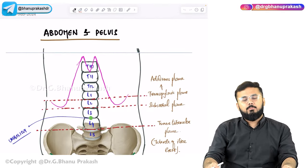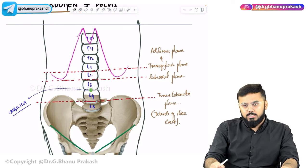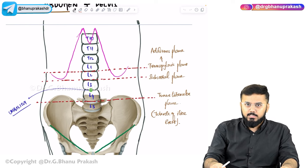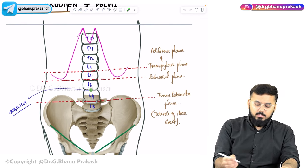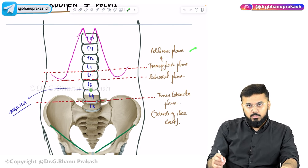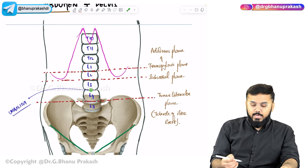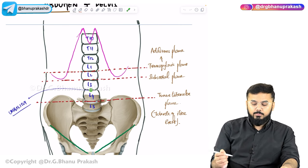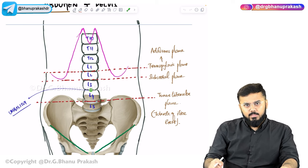Hello guys. We shall be discussing some important topics in Abdomen and Pelvis. The first picture shows different kinds of planes. The transpyloric plane, also called Edison's plane, is an imaginary line between L1 and L2. There are many structures located within this transpyloric plane, which we shall discuss in a minute.